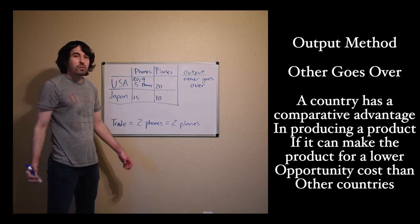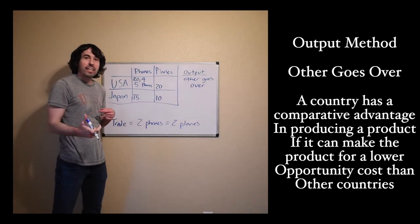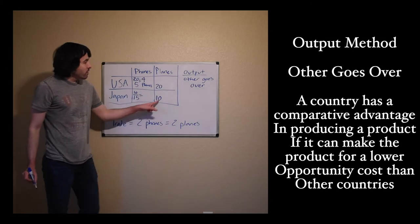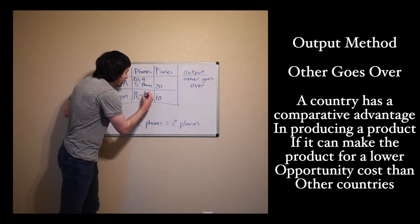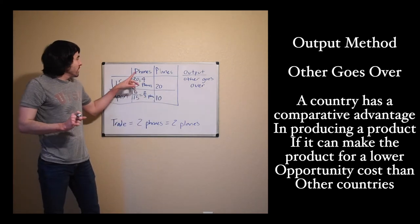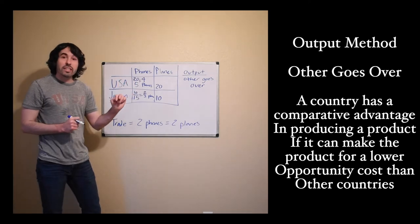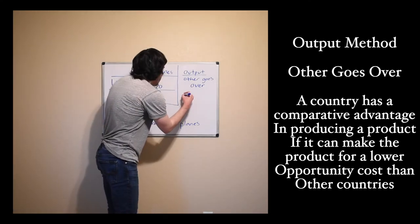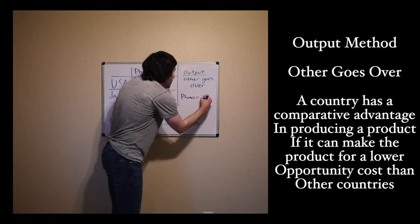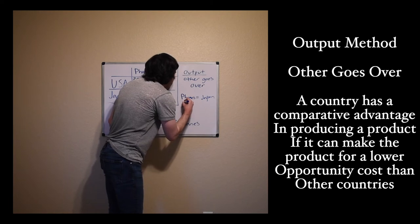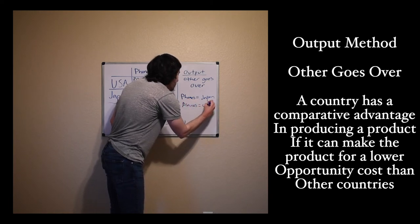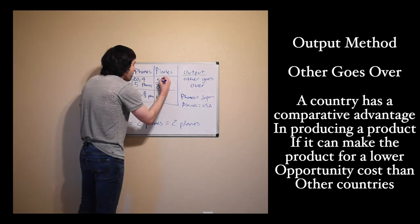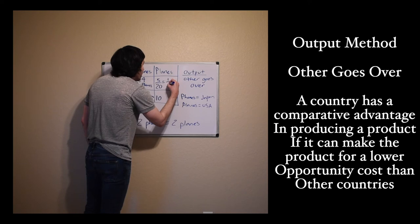So every time the U.S. makes one phone, they give up four planes. For Japan, to find the opportunity cost of making one phone, we take the planes — the other number — and put it over. 10 divided by 15 comes out to two-thirds of a plane. So when the U.S. makes a phone, they give up four planes; Japan only gives up two-thirds of a plane to make a phone. Japan has the comparative advantage in producing phones. So phones are going to be made by Japan, and that means planes will definitely be made by the U.S.A. We can also do the math for the opportunity cost of making one plane: the other goes over — 5 over 20 — equals one-fourth of a phone.